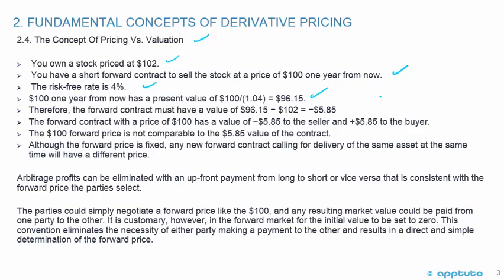Therefore, the forward contract must have a value of the forward price minus the spot price: $96.15 minus $102, which equals negative $5.85. The forward contract with a price of $100 has a value of negative $5.85 to the seller and positive $5.85 to the buyer. The $100 forward price is not comparable to the $5.85 value of the contract — that's why we said they're not comparable.